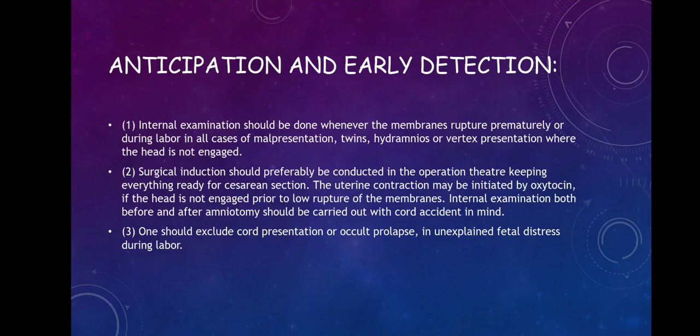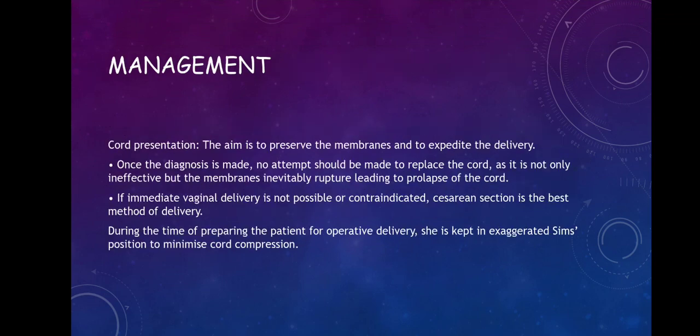Internal examination both before and after amniotomy should be carried out with cord accident in mind. One should exclude cord presentation or occult prolapse in unexplained fetal distress during labour. The aim is to preserve the membranes and to expedite delivery. Once the diagnosis is made, no attempt should be made to replace the cord, as it is not only ineffective but the membranes will inevitably rupture, leading to prolapse of the cord. If immediate vaginal delivery is not possible or contraindicated, caesarean section is the best method of delivery. During preparation, she is kept in an exaggerated Sims position to minimize cord compression.